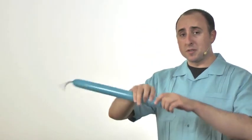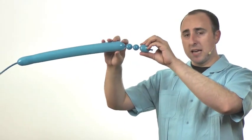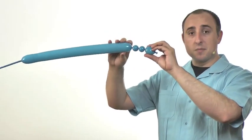Next we're going to twist two bubbles, each about half an inch. This is going to be the back of the teddy bear's head. They don't have to be exactly the same size, but it does help.